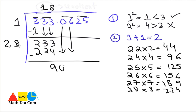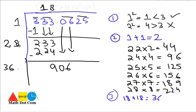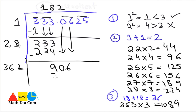Again the next step: double the quotient. The quotient so far is 18, and 18+18 = 36. We write 36 here with a blank space. We try 362×2 = 724 and 363×3 = 1089, which is greater than 906. So we select 362×2 = 724. Subtracting, 906 − 724 = 182. Then we bring down the last pair '25', giving us 18225.